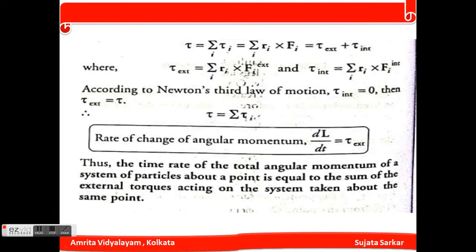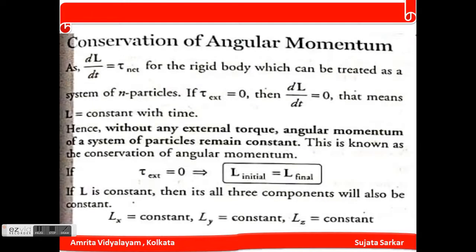This is a very important derivation. The time rate of the total angular momentum of a system of particles about a point is equal to the sum of external torques about the same point. This is the conservation of angular momentum. When τ_external equals zero, dL/dt equals zero, which means L is constant with time. So without any external torque, the angular momentum of a system of particles always remains constant.